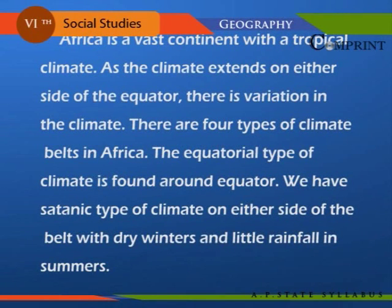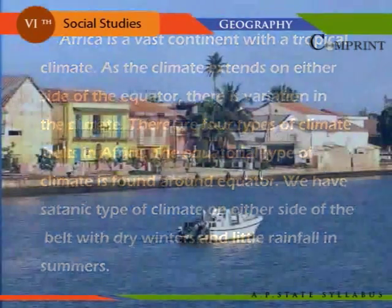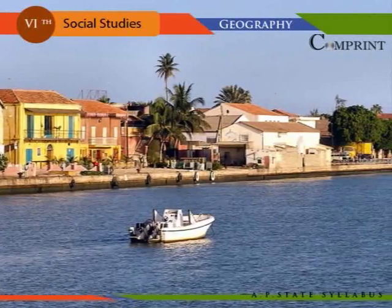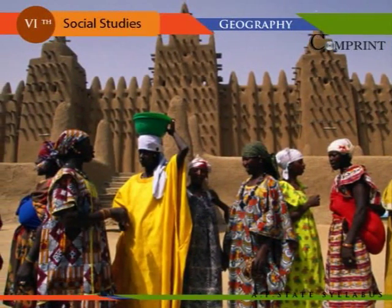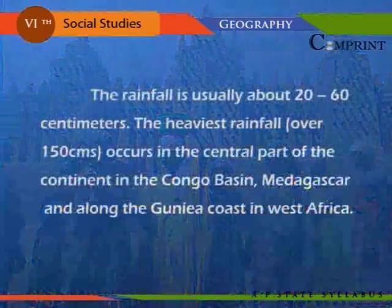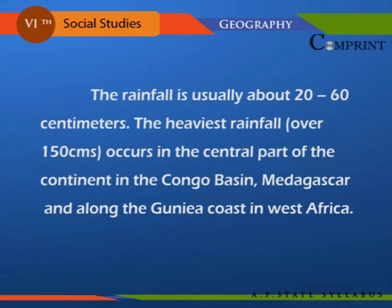Africa is a vast continent with a tropical climate. As the continent extends on either side of the equator, there is variation in the climate. There are four types of climatic belts in Africa. The equatorial type of climate is found around the equator. We have Sudanic type of climate on either side of this belt, with dry winters and little rainfall in summer. The tropical savannah type of climate is found in Senegal, Guinea, and Mali. Rainfall is usually about 20 to 60 centimeters, while the heaviest rainfall of over 150 centimeters occurs in the Congo basin, Madagascar, and the Guinea coast of West Africa.